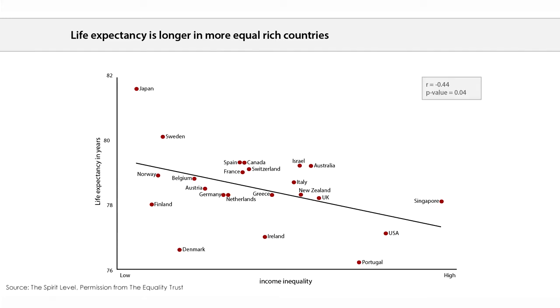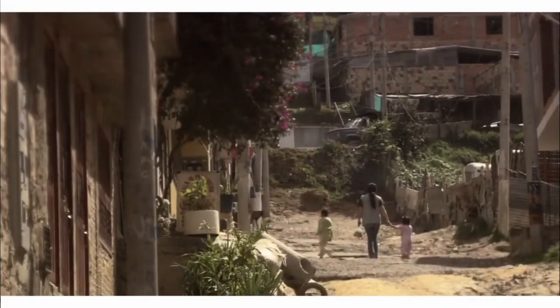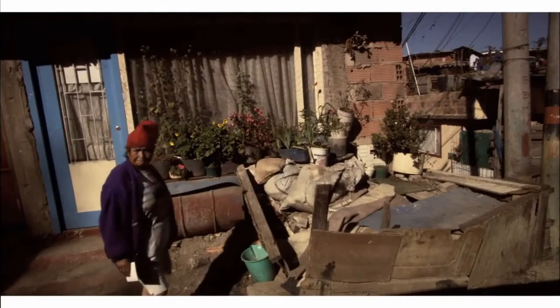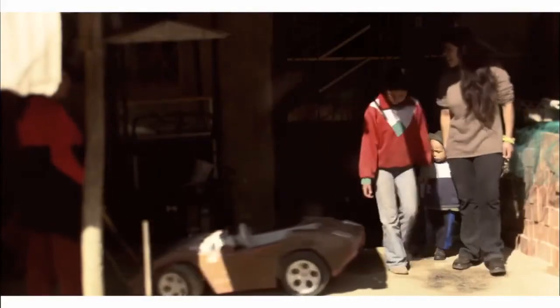If you take all the high-income countries and look at which have done best in terms of life expectancy, again Japan scores very well. Others also tend to show a gradient based on the gaps between high-income and low-income groups. So as income inequality grows, the benefits to life expectancy that you expect with an overall rise in national income tend to be diminished.